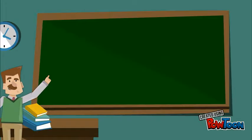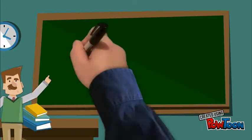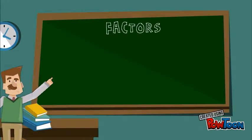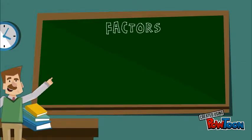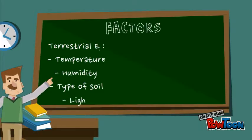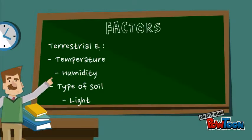Living things are affected by different factors in the environment. Do you remember there are two different types of ecosystems, terrestrial and aquatic? In terrestrial ecosystems the main factors are temperature, humidity, type of soil and light.